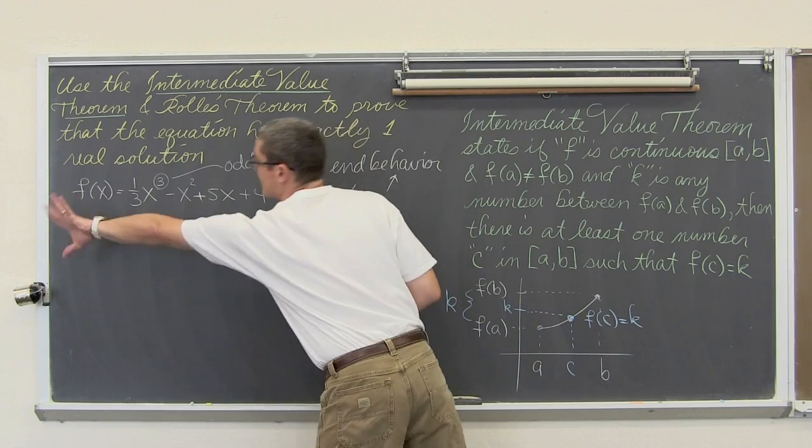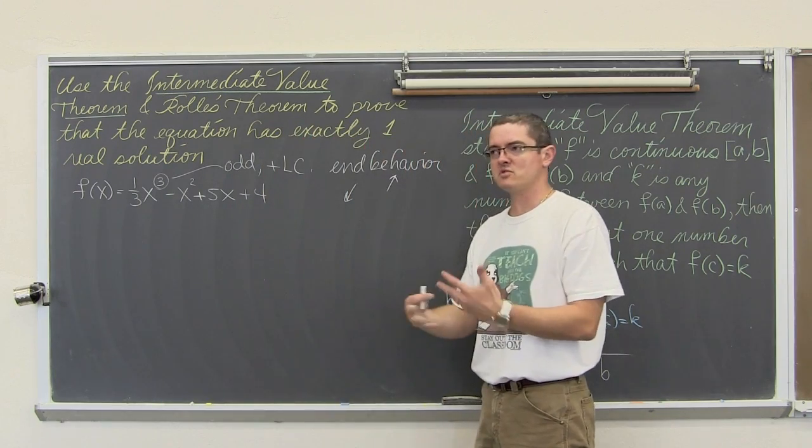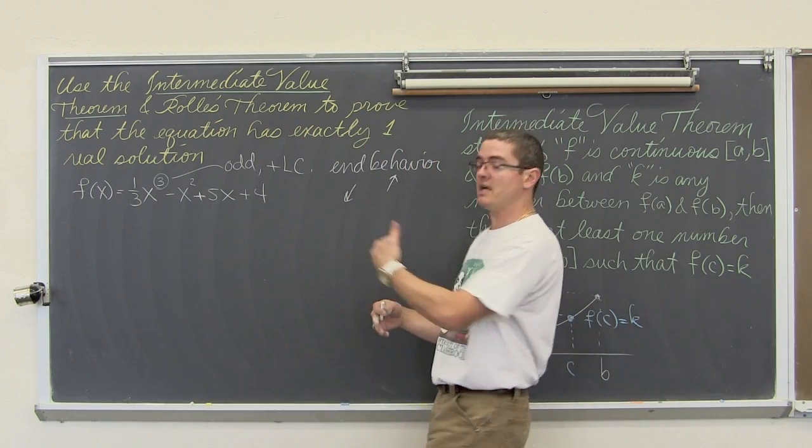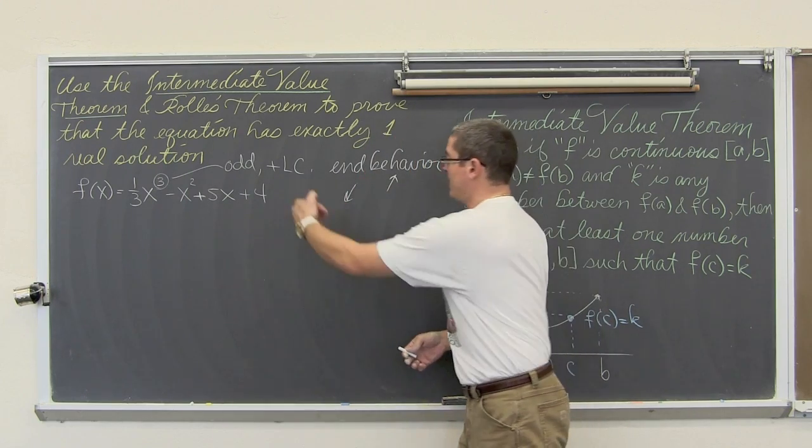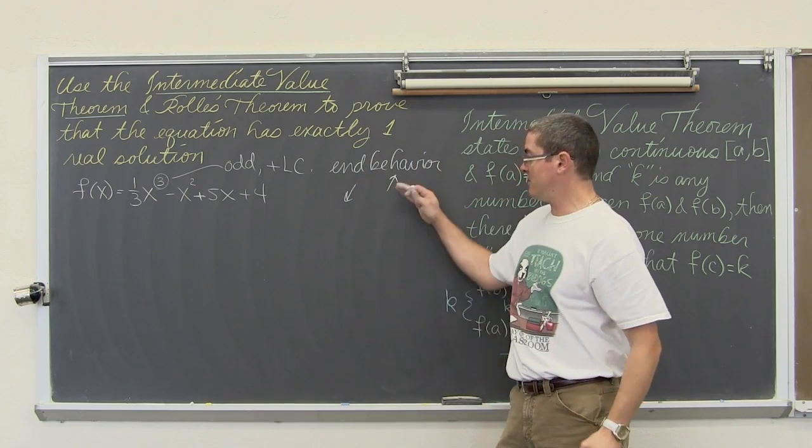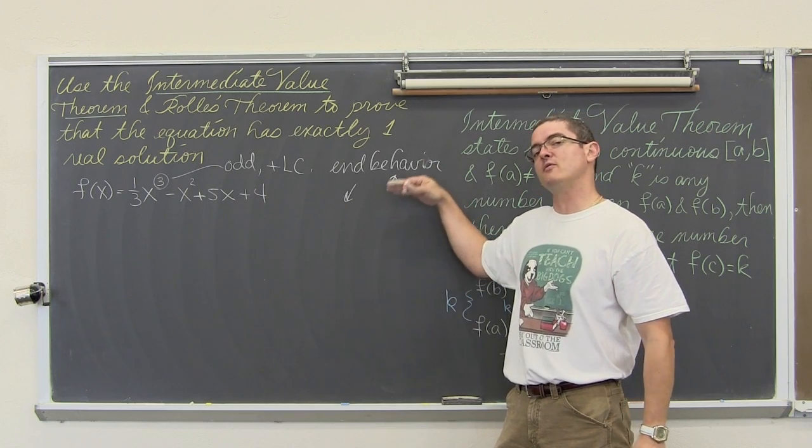So as this function goes to negative infinity, there is your limit notation, as x approaches negative infinity, the y values are going to approach negative infinity. And as x goes to positive infinity, the x values, excuse me, the y values.